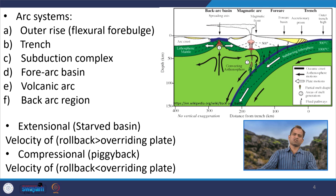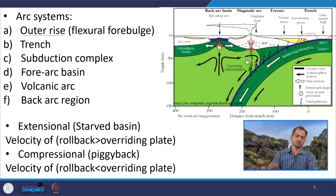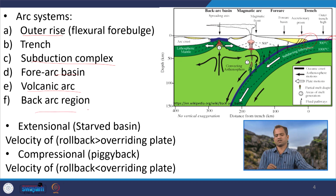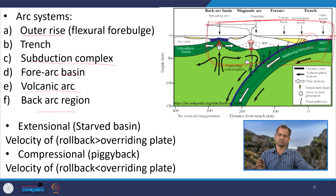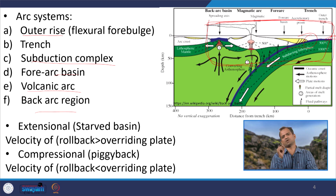Talking about the arc system, we have an outer rise — that is the bulge — then the trench, then a subduction complex, then a foreland basin, then the volcanic arc, and then the back-arc region. This entire region is characterized by a series of sedimentary basins with different depth, different pressure-temperature conditions, different sizes, and different sources of sediments.